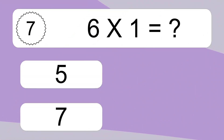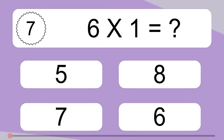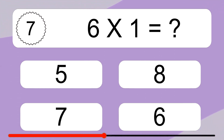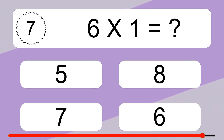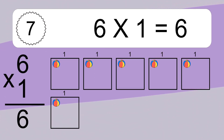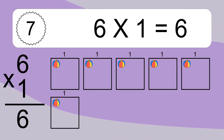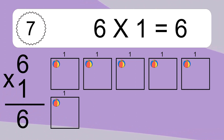6 times 1 equals what? 6 times 1 equals 6. We have 6 boxes, and each box has 1 colorful ball inside. If you count all the balls in all the boxes together, you will have 6 times 1 balls. This equals 6 balls.